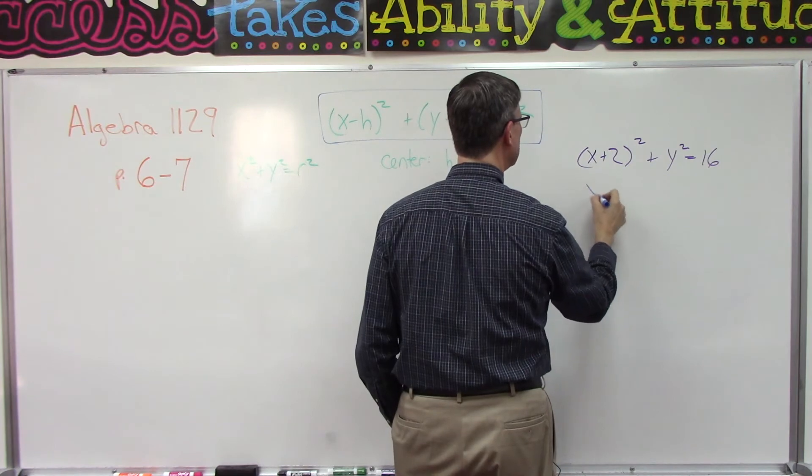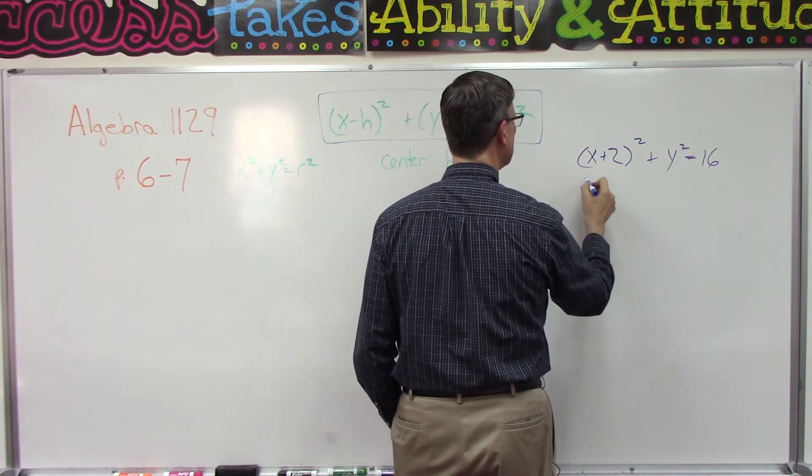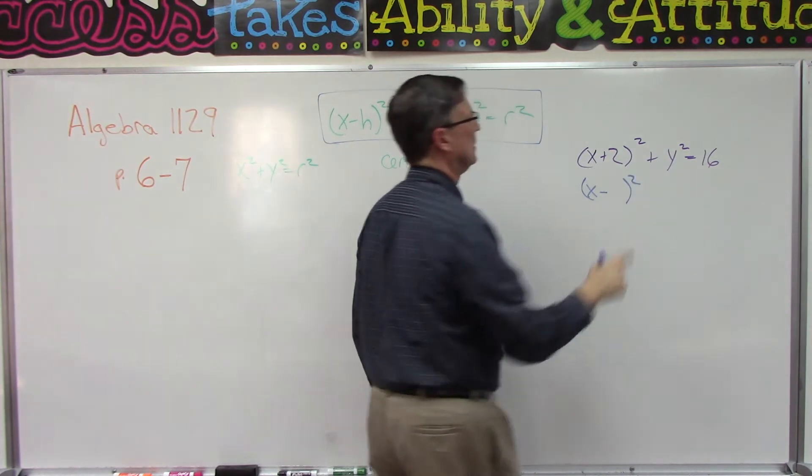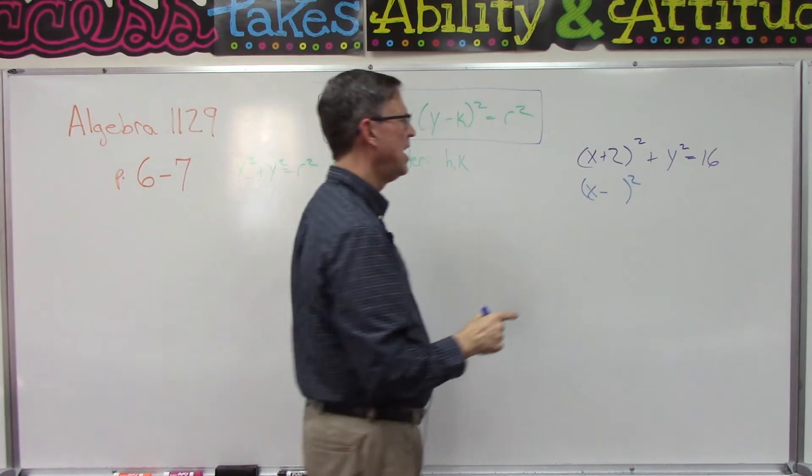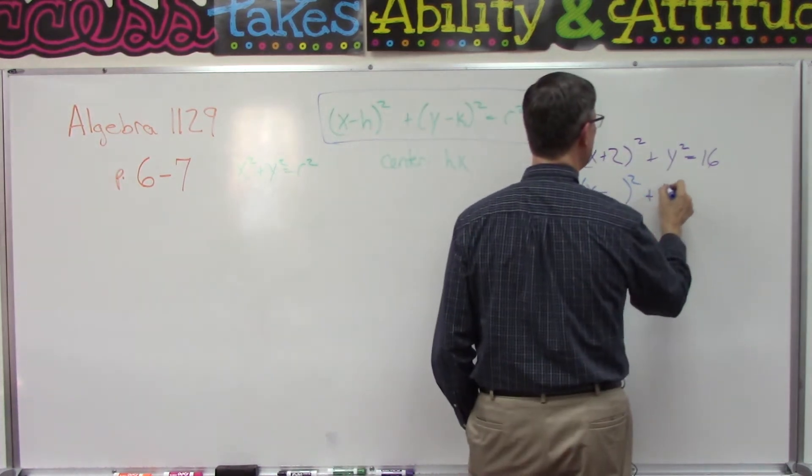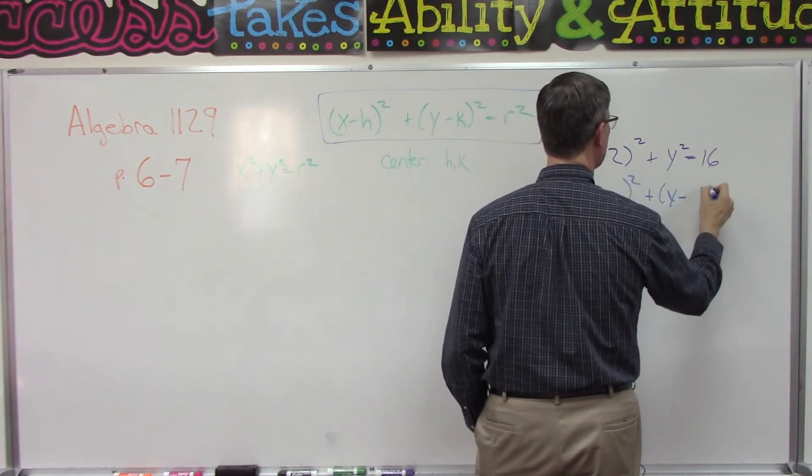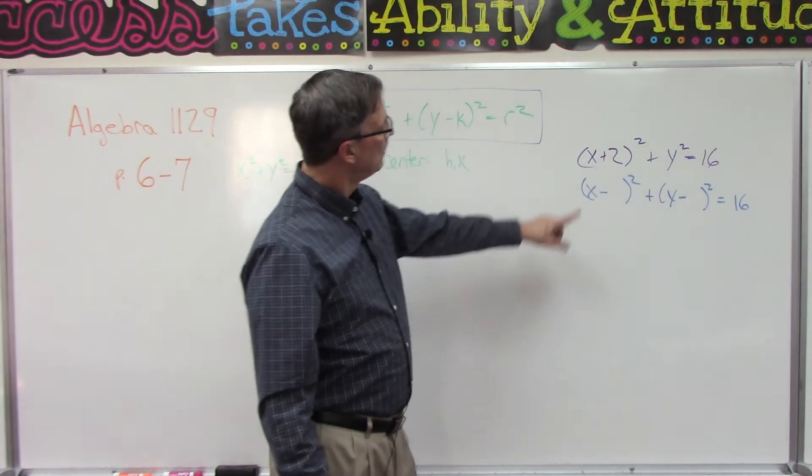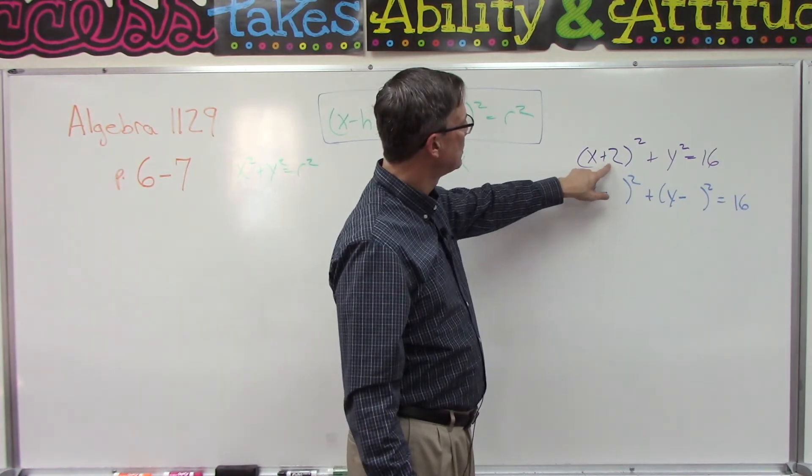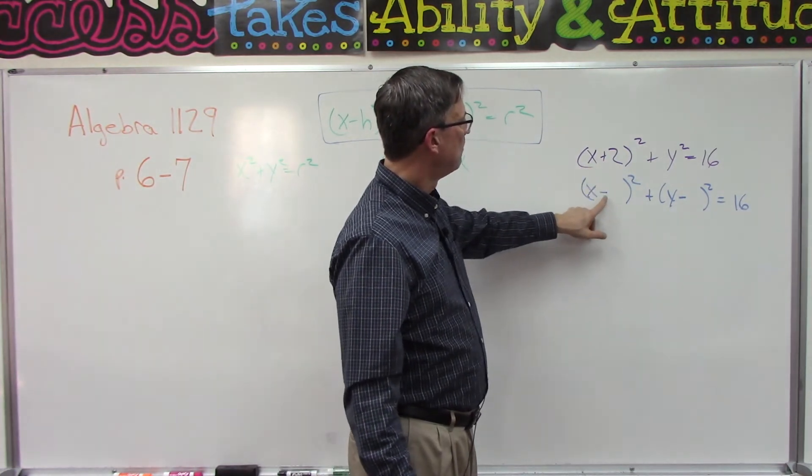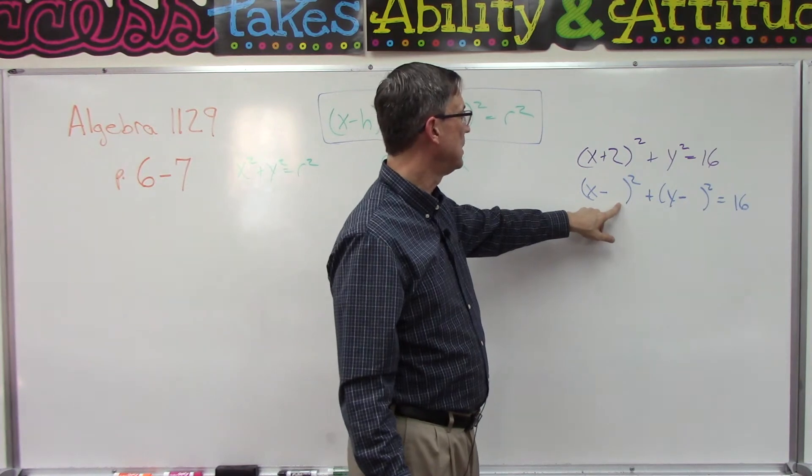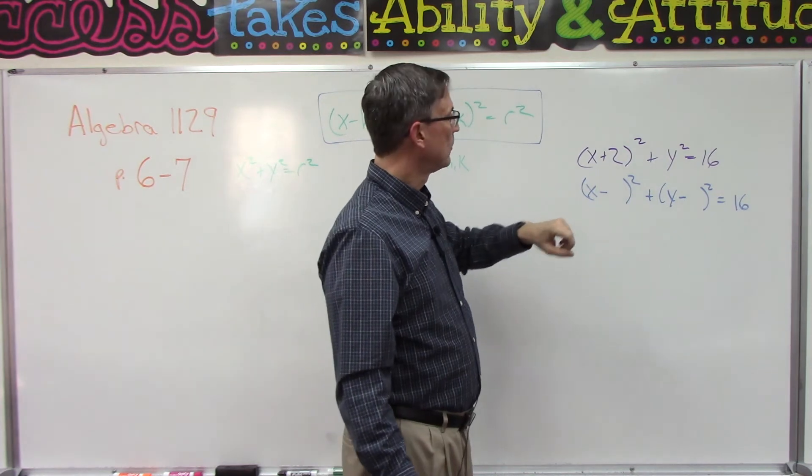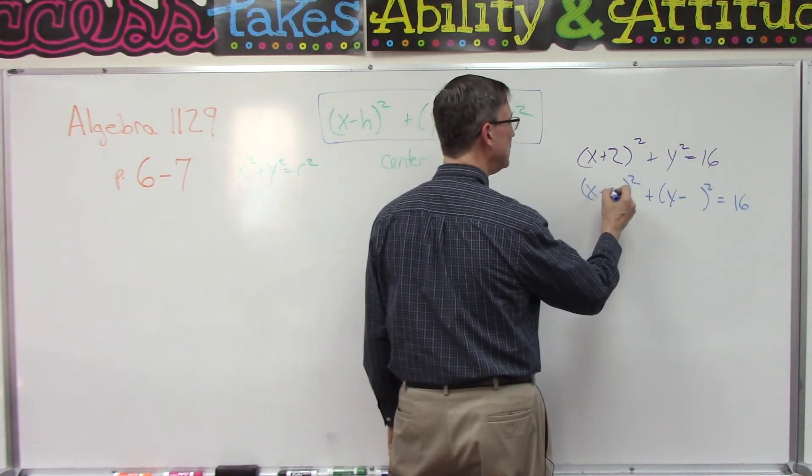X minus h, the quantity squared. Oh, this is x plus 2, but I'm supposed to have it in this form, x minus something squared. And then over here I'm supposed to have it in the form y minus something squared equals 16.